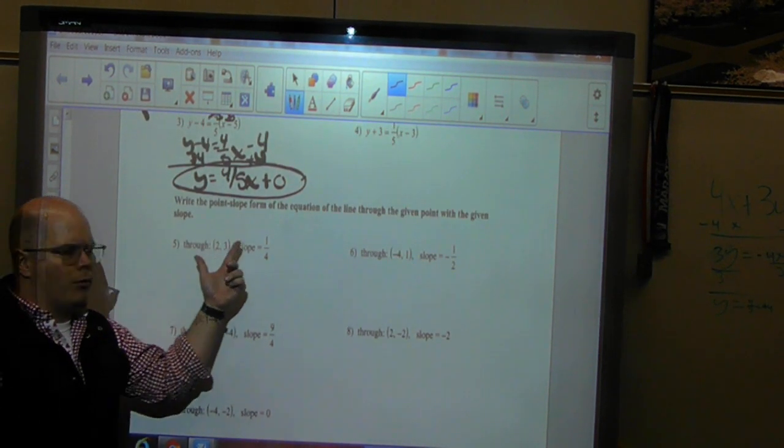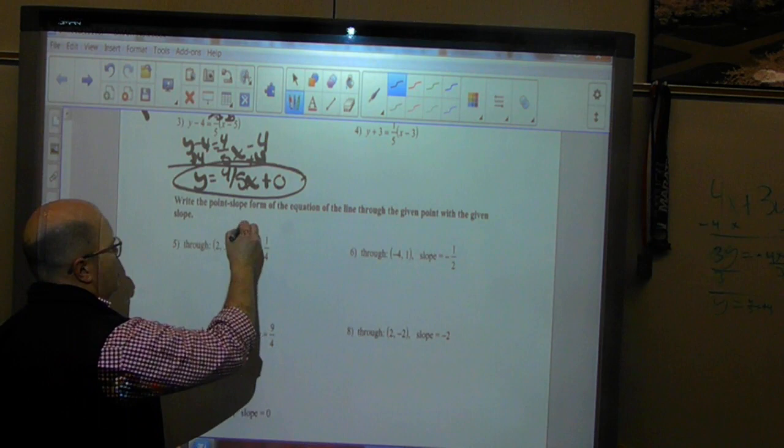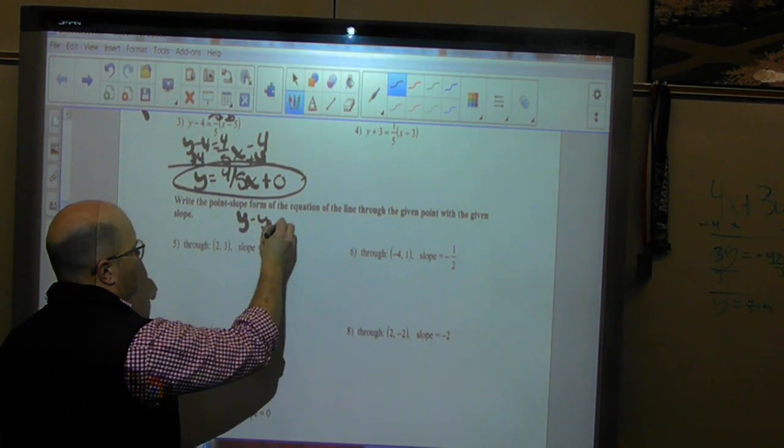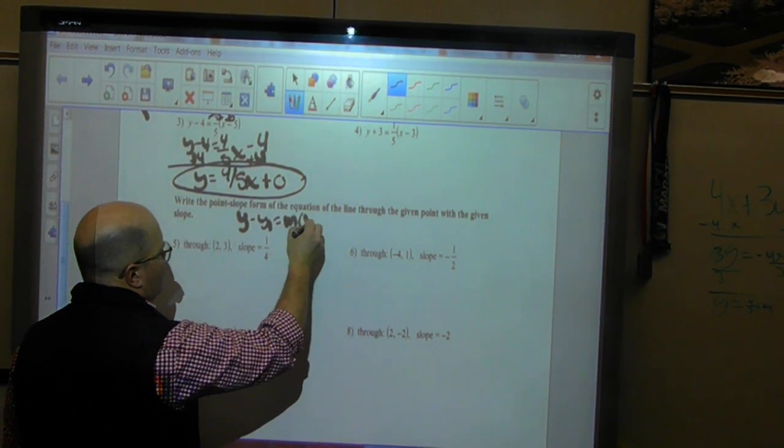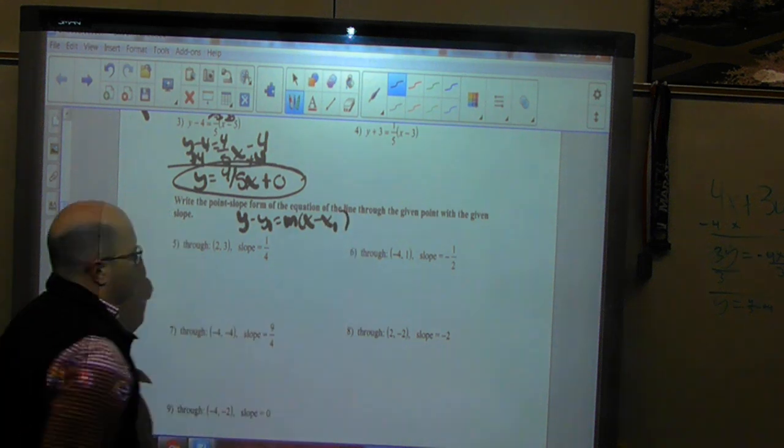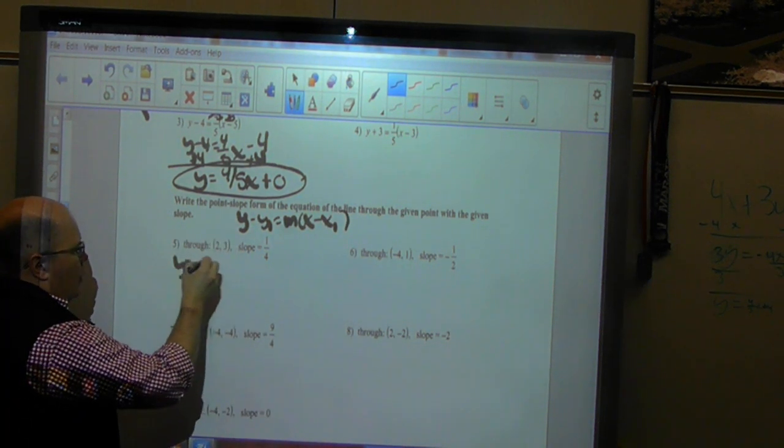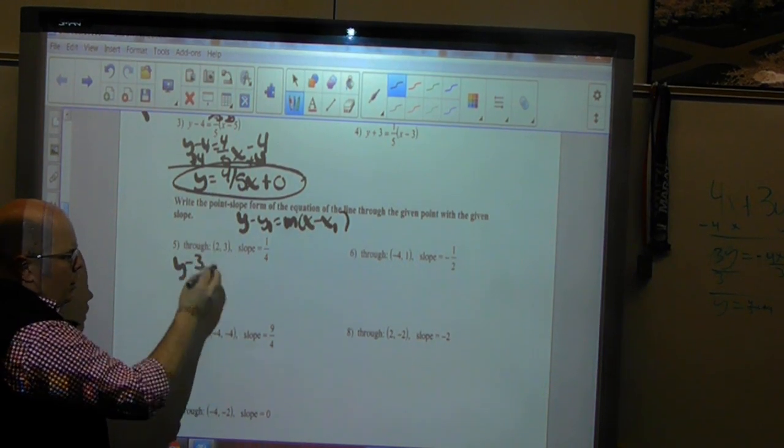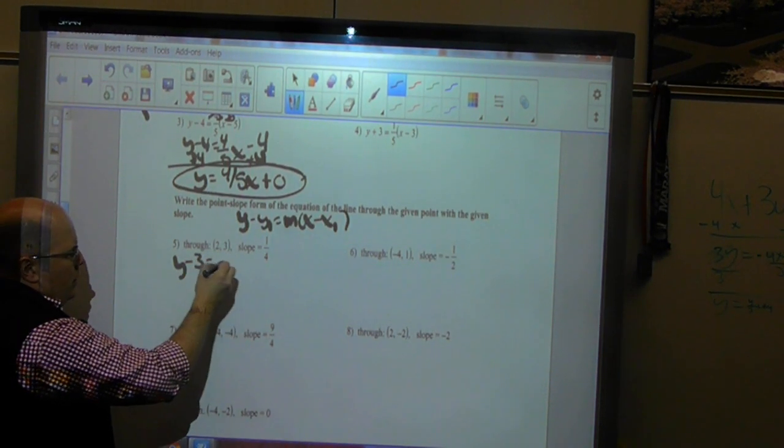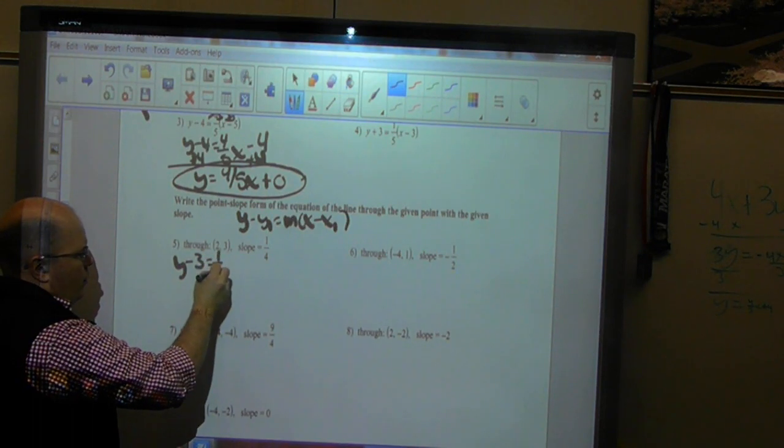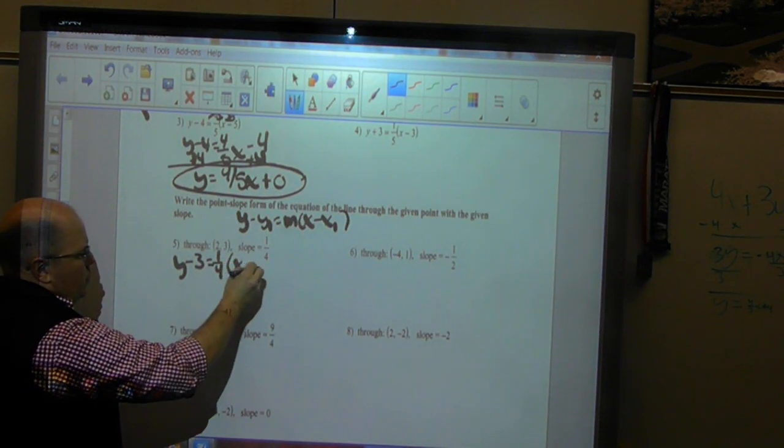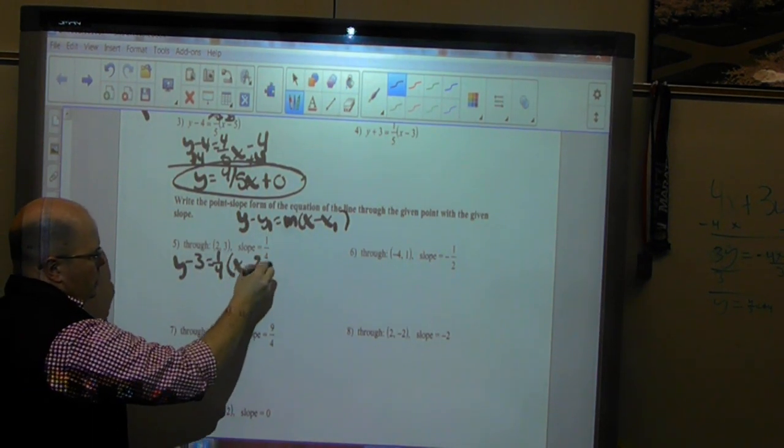Here's an example where we have our points given, and we're just trying to put it into this format. So in this case, we're just going to leave our y, we're going to minus our y value coordinate that's given to us, which is 3. And we're going to equal that to our slope, which is 1 over 4x minus our x coordinate, which is 2.